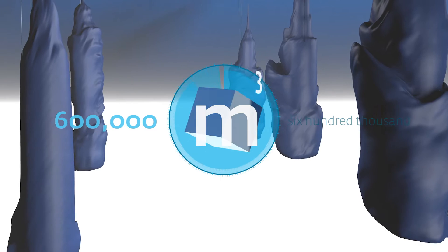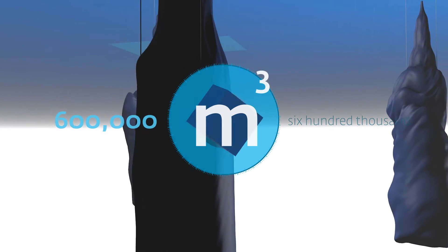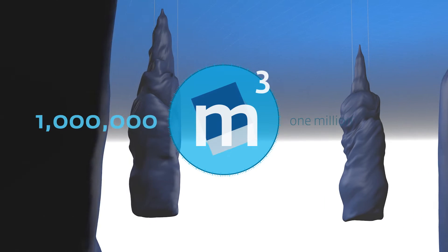Four of the caverns have a volume of approximately six hundred thousand cubic meters each, while the fifth is nearly a million cubic meters in volume.